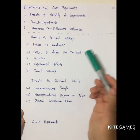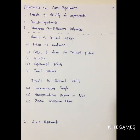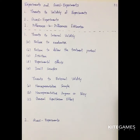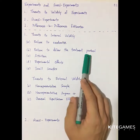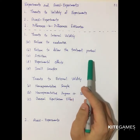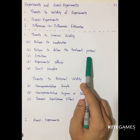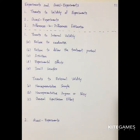Second is failure to follow the treatment protocols. Sometimes treatments are failed to be followed. For example, if you want to test whether the addition of fertilizer can increase crop yields, some farmers may find that increasing fertilizer is harmful to crops and they don't want to do so, or they add less fertilizer. As a result, they don't follow the treatment and your results will be biased.